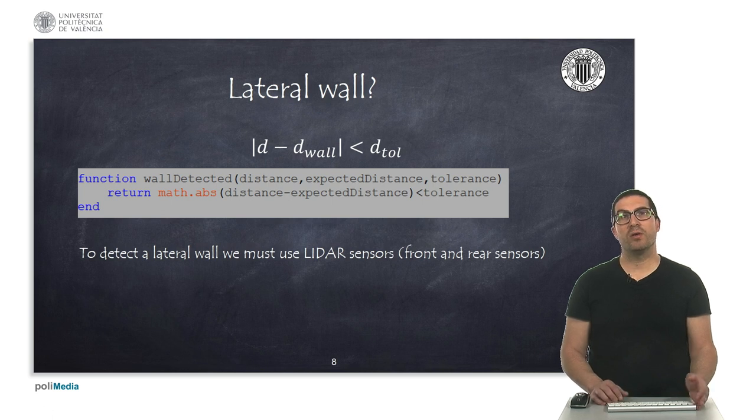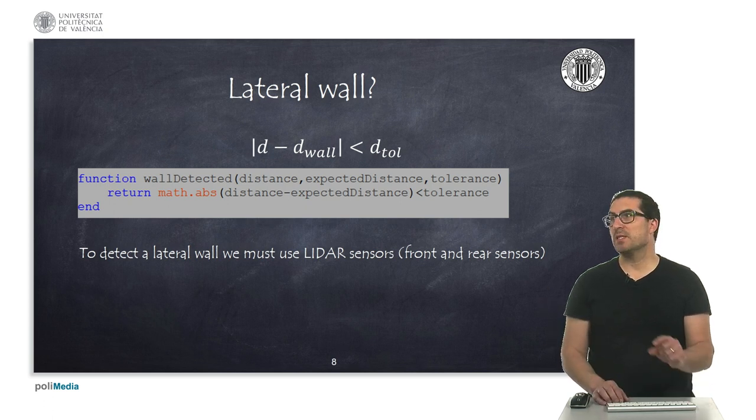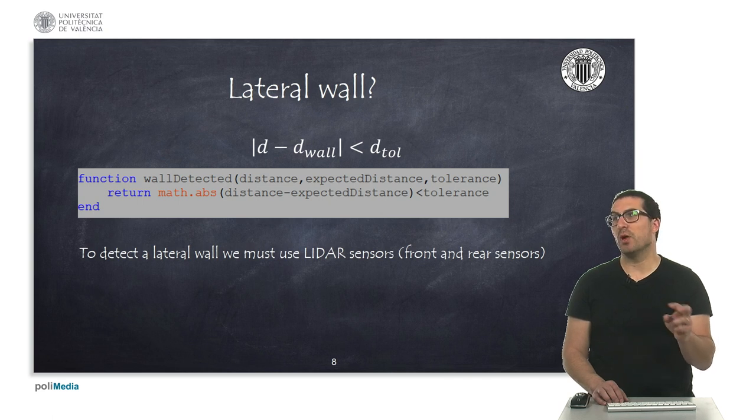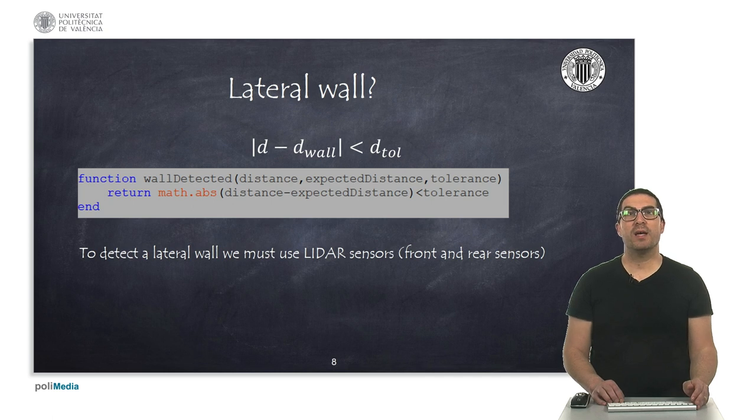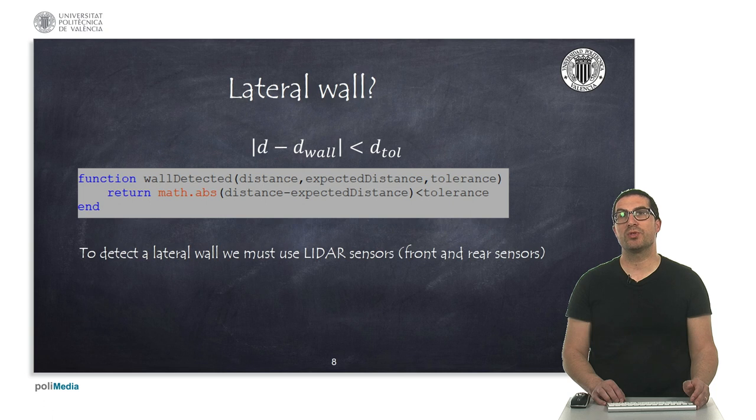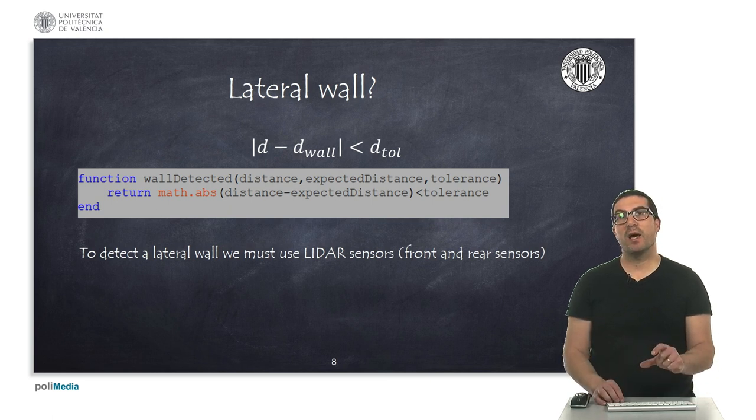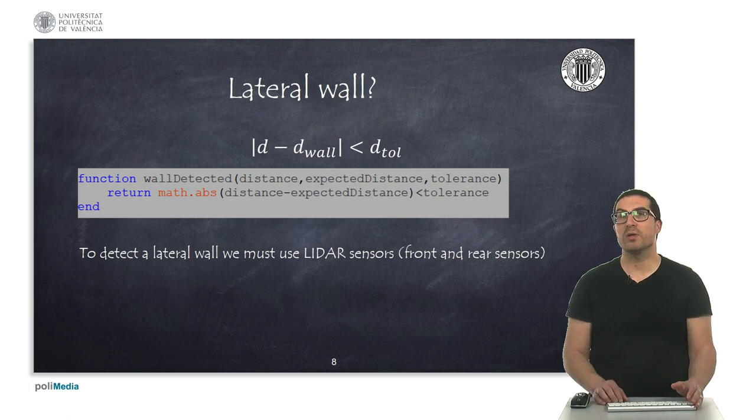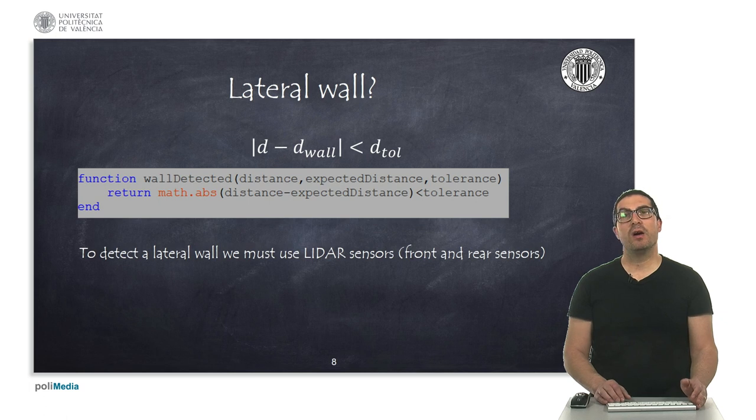The wall-detected function will be used to determine if the LIDAR sensor detects the wall on one side or not. This is done for one single sensor. You have to call this function for both sensors, actually. In fact, this function basically returns a Boolean variable that will return true in case that the absolute value of the difference between the measured distance and the expected distance is less than a given tolerance. This tolerance is a value that you must adjust in this case. This expected distance is something we saw in the previous video, how to compute it. It depends basically on the cell size and the wall thickness and the separation of the LIDAR sensors with respect to the middle line of the robot.